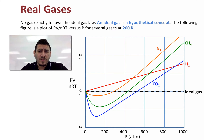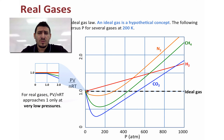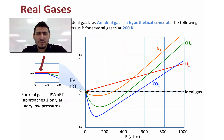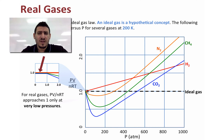However, if we zoom in to the zone of very low pressure, we can see that at the very beginning the curves started as a straight line, which means that these gases were behaving ideally, but this should happen only at a very low pressure.